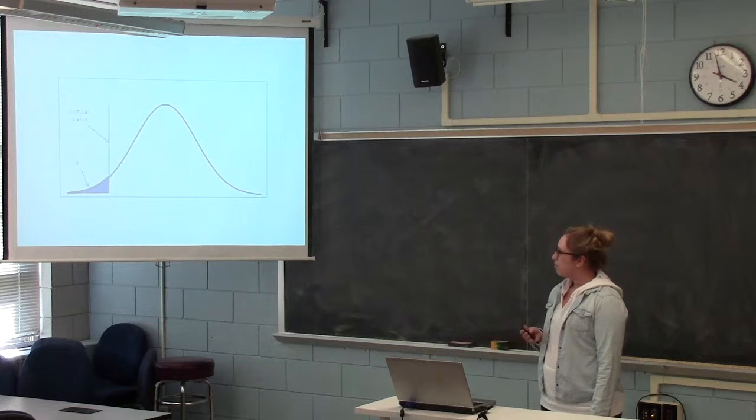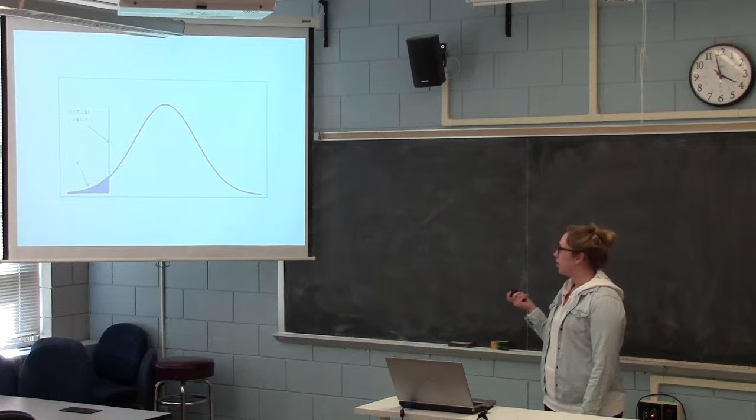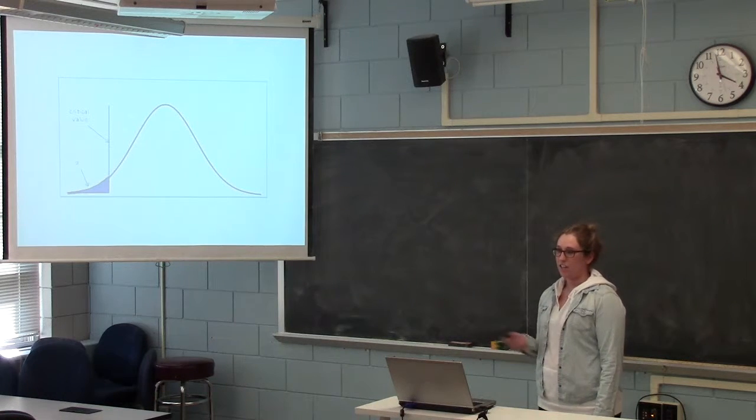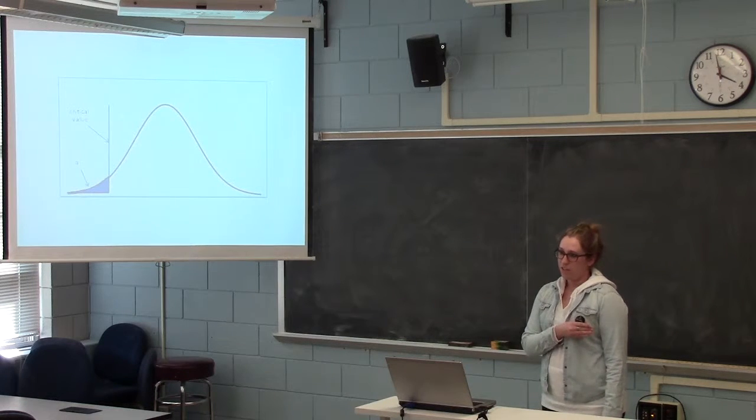So this type of test we would call a left-tailed test. In this case, our critical value would be the 30 questions that she answered correctly, and then we're measuring everything from 30 questions correct all the way down to 0.